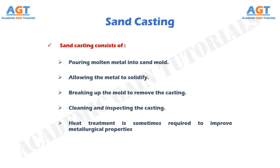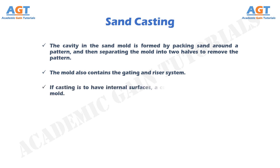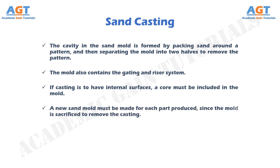The cavity in the sand mold is formed by packing sand around a pattern, and then separating the mold into two halves to remove the pattern. The mold also contains the gating and riser system. If the casting is to have internal surfaces, a core must be included in the mold. A new sand mold must be made for each part produced, since the mold is sacrificed to remove the casting.